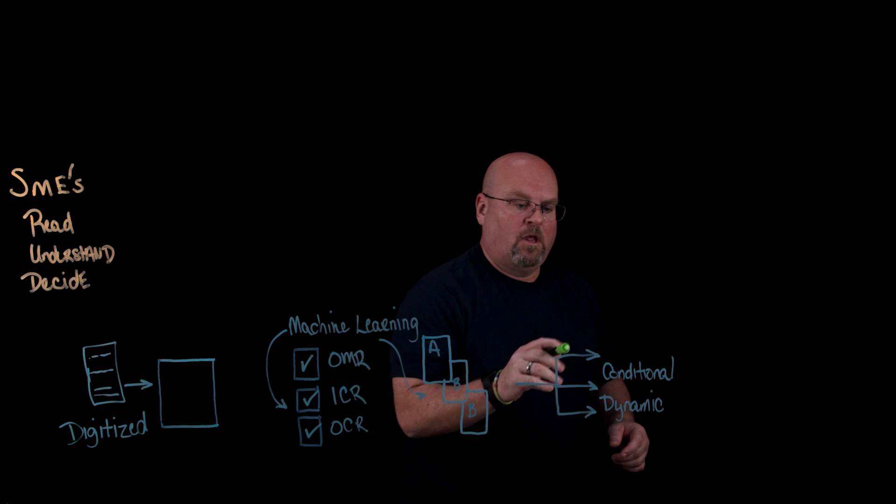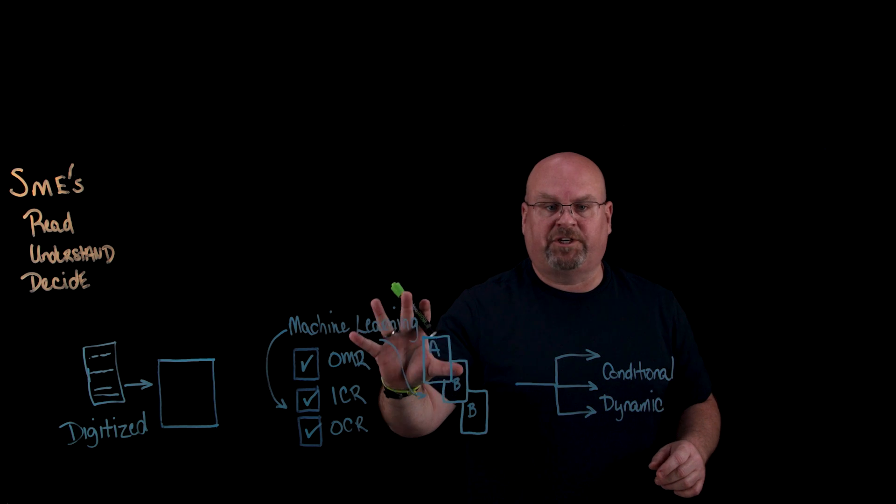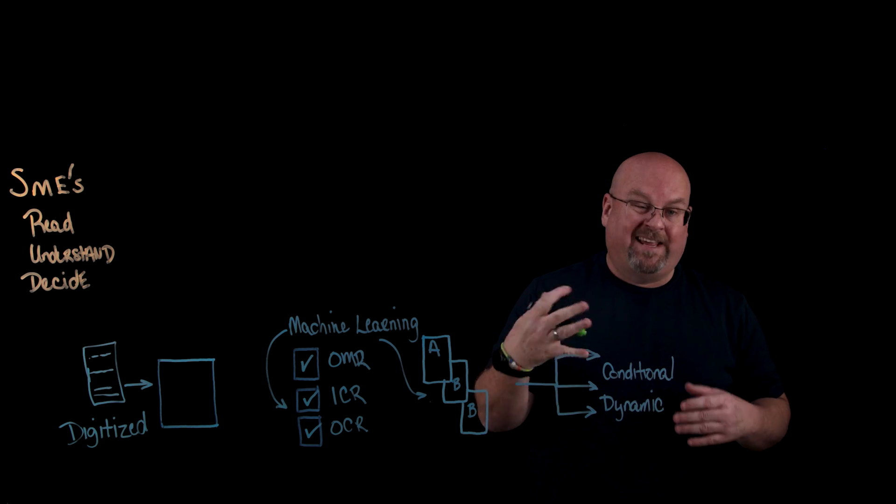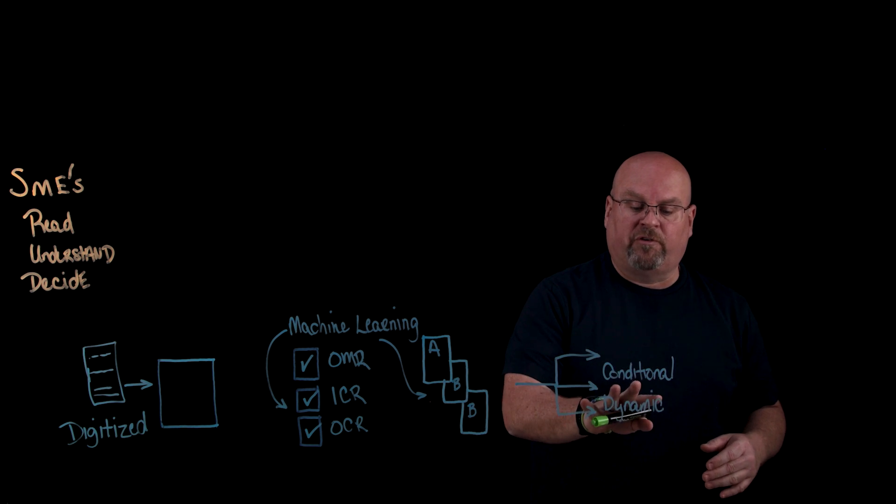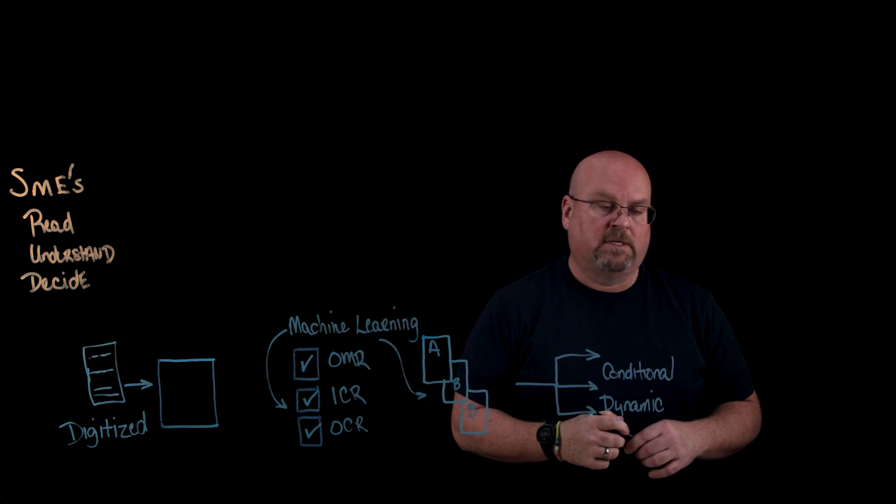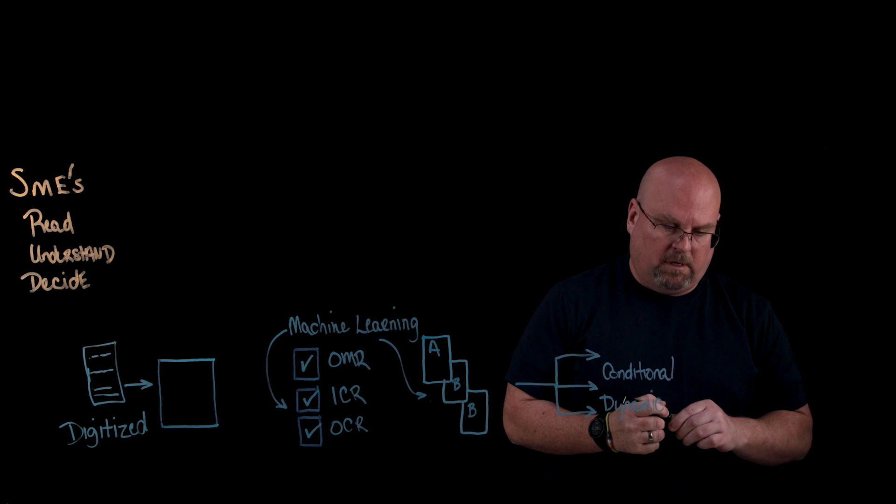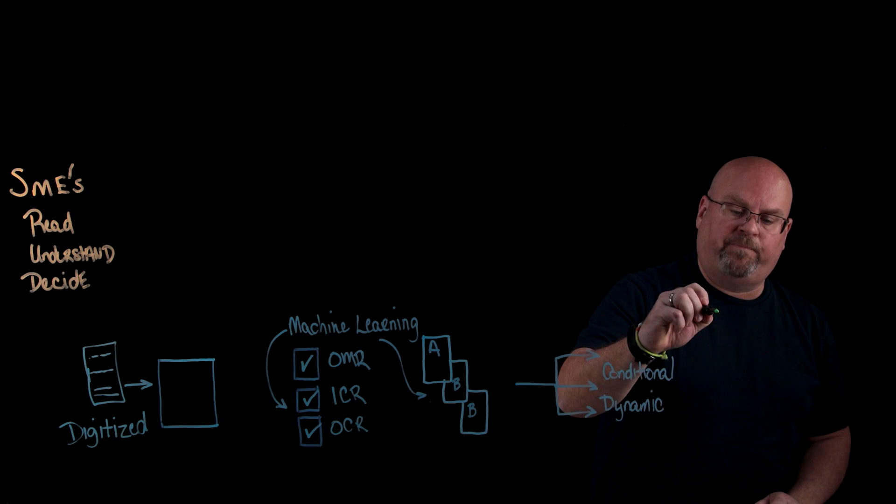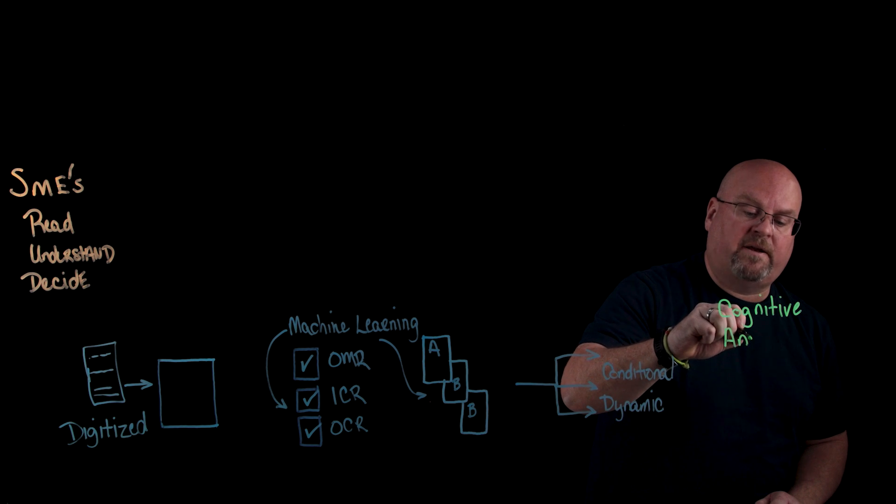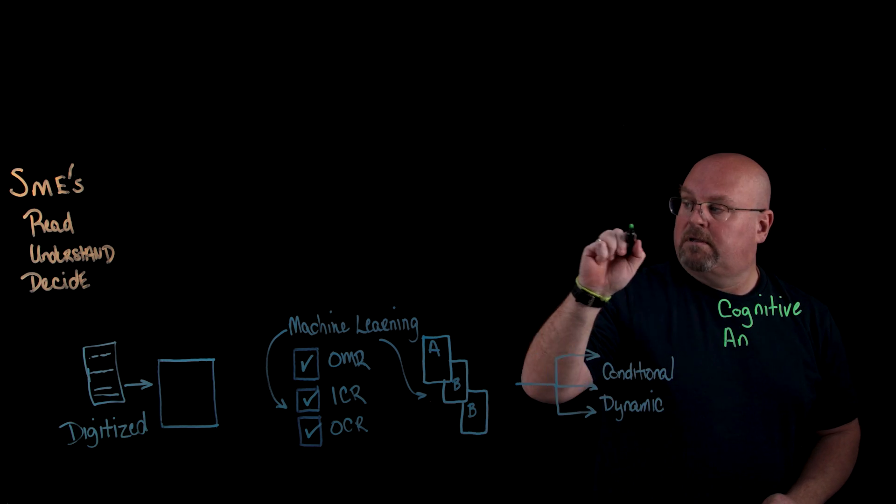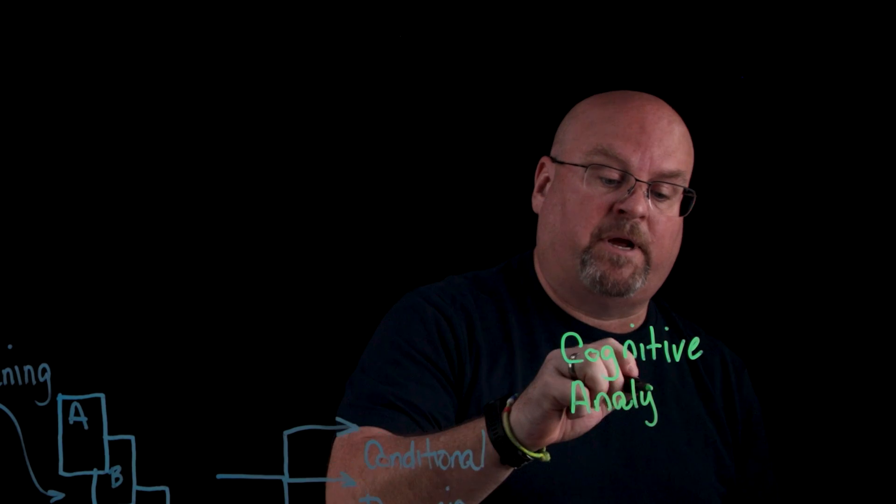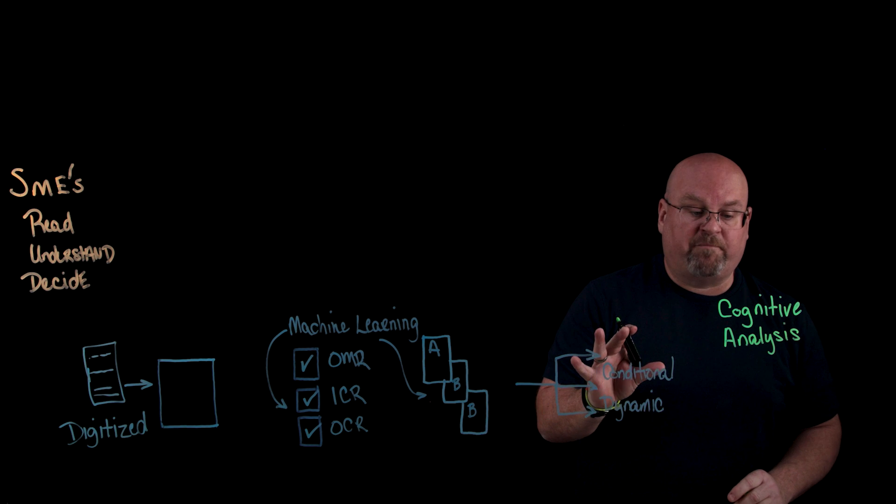So now let's talk about cognitive analysis. We've already digitized our documents. We've applied recognition and extraction techniques to read the documents, to lift the information off of them as we process them, which helped us get some rudimentary level information in order to do some level of routing. But what we don't have yet is context for the subject matter expert. They still need more information in order to make a decision. And so in this cognitive analysis step, I can provide and leverage AI to give and communicate to my subject matter expert more comprehensive information.